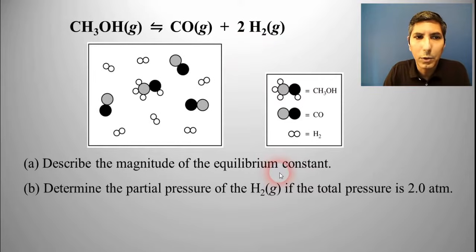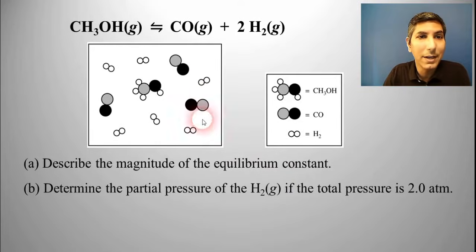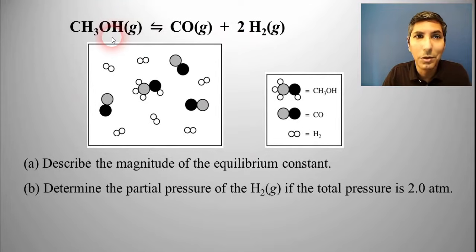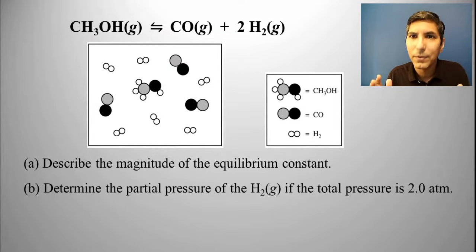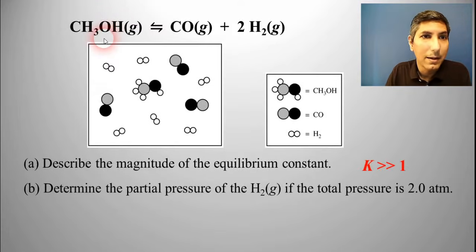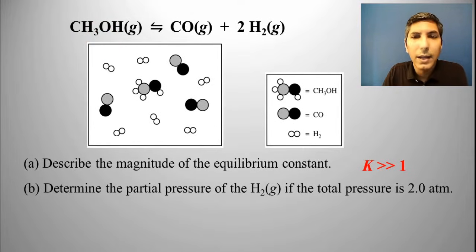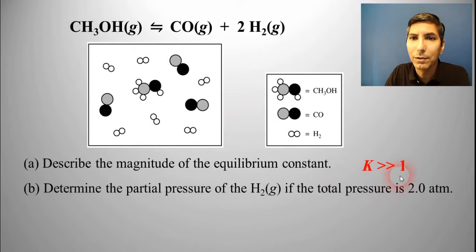In part A, the question asks us to describe the magnitude of the equilibrium constant. Since we have nine out of ten molecules that are products and only one out of ten that is a reactant, it's safe to say we have a lot of product, so we're going to have a very large equilibrium constant — much greater than one. If you had a lot of reactants instead, that would represent a very small equilibrium constant.